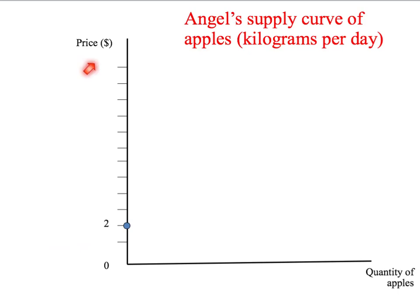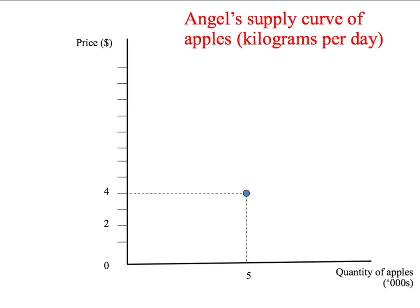Let's start drawing Angel's supply curve of apples. On the vertical axis we have the price in dollars; on the horizontal axis we have the quantity of apples in thousands of kilograms. If the price is less than $2 per kilogram, Angel will sell no apples, so her supply curve is just the vertical axis. As the price goes up — say to $4 per kilogram — Angel would like to sell 5,000 kilograms of apples per day. That gives us a point on her supply curve.